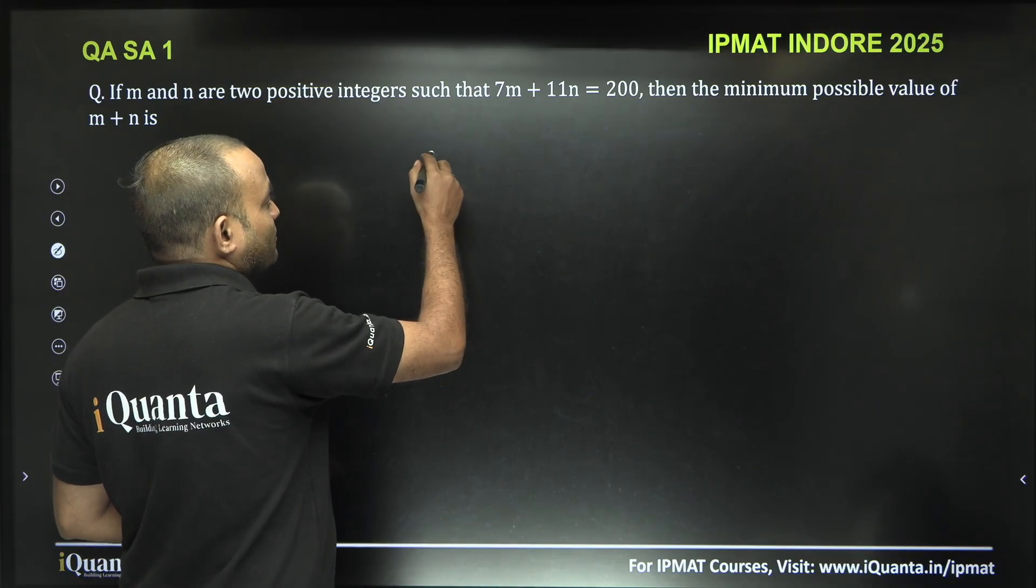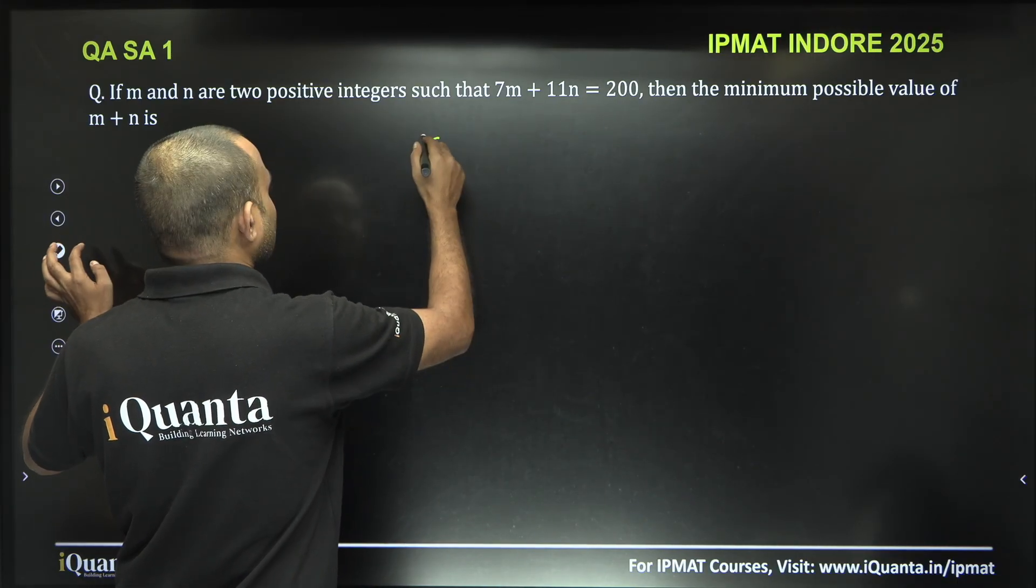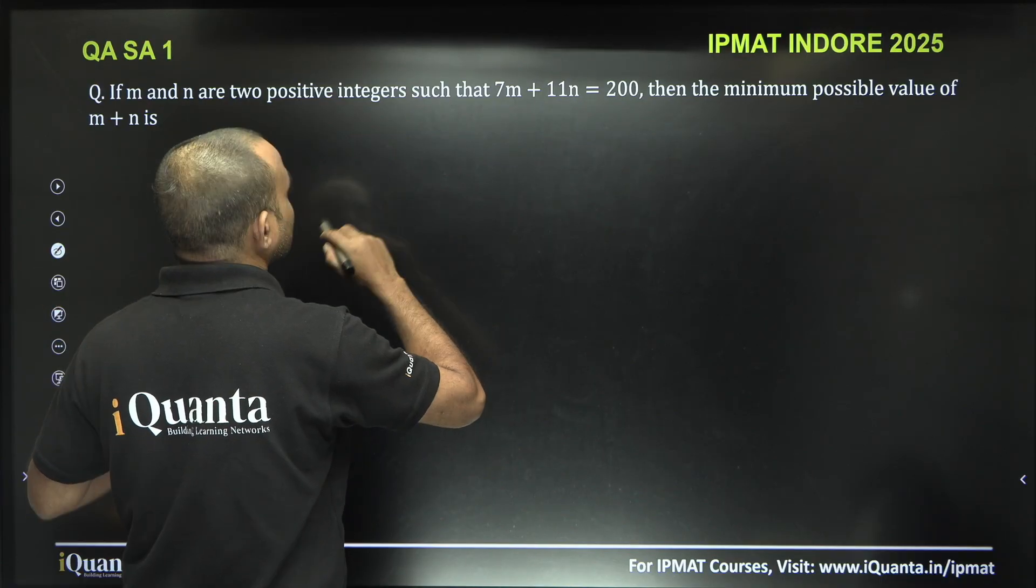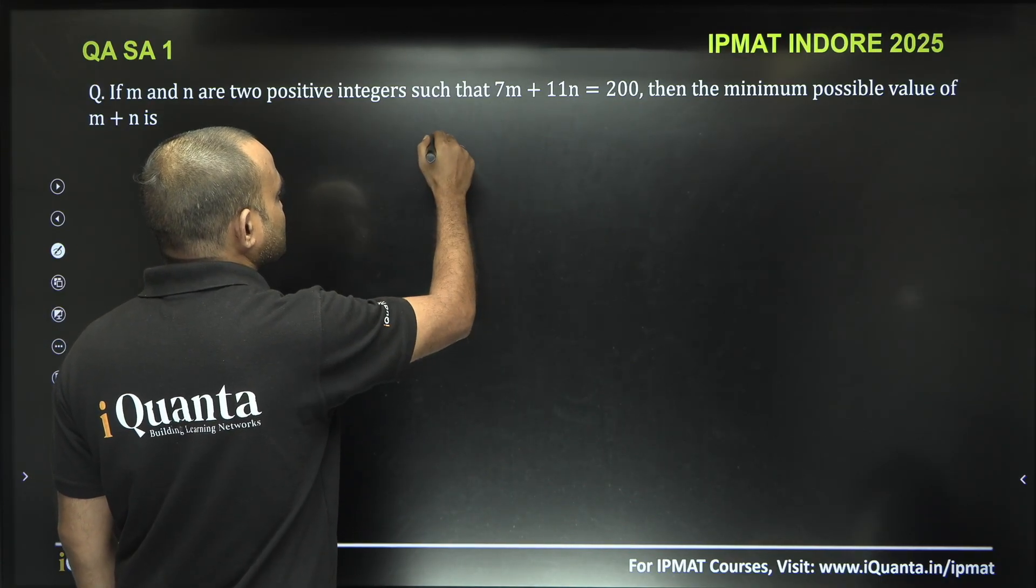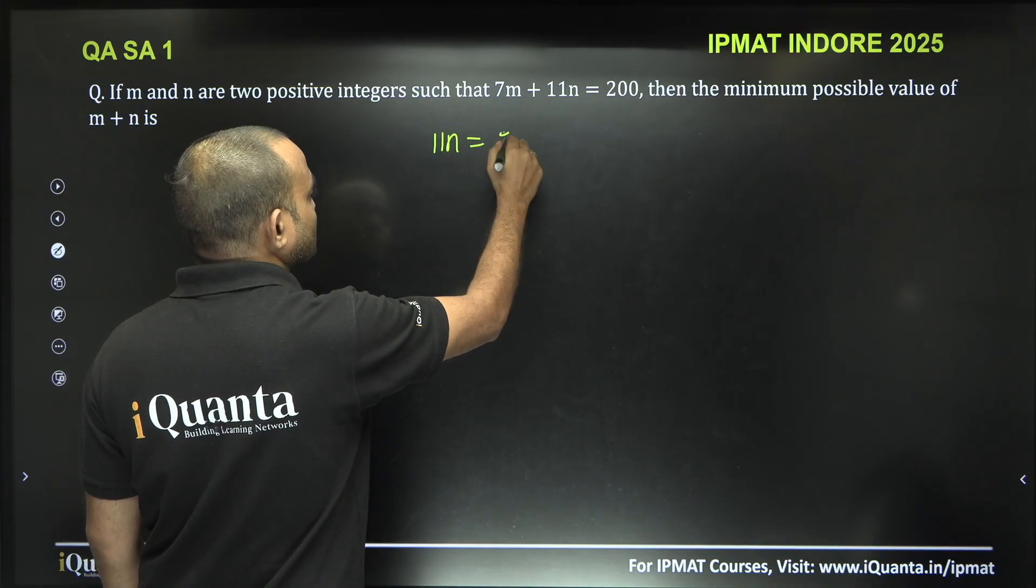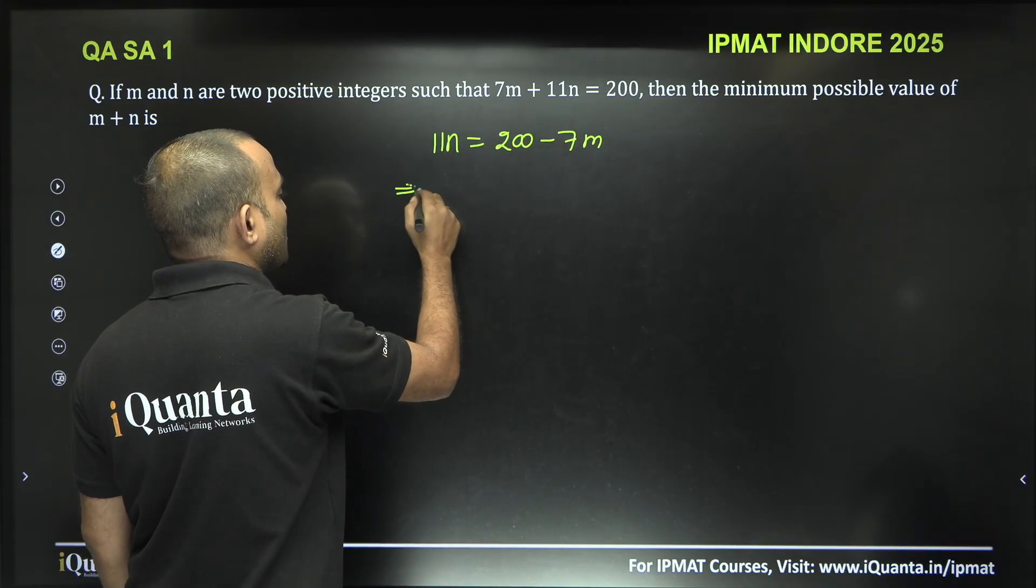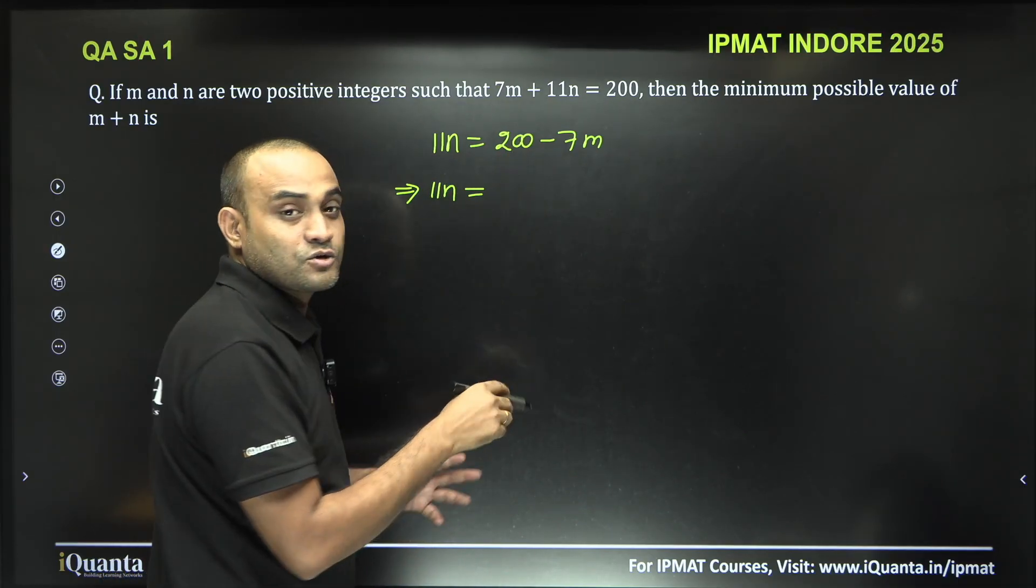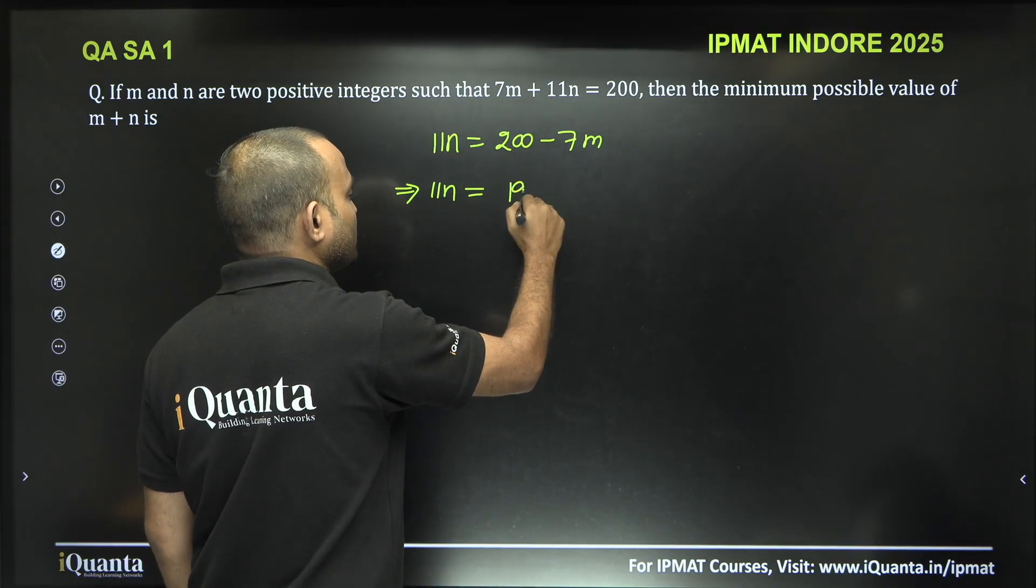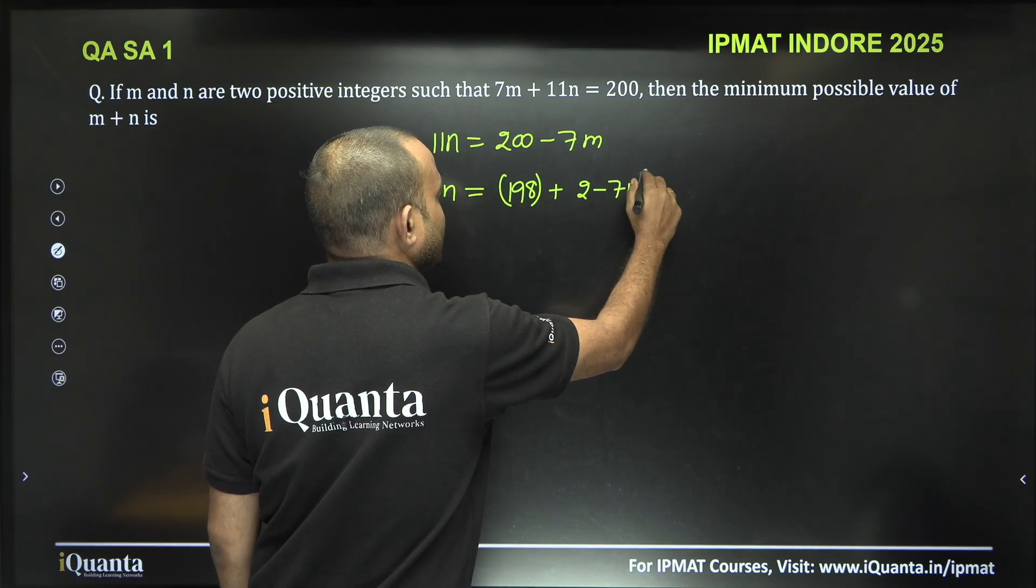We can say that 7m plus 11n is 200. We need to find the minimum value of m. So 11n is equal to 200 minus 7m, or we can say 11n is equal to, now break it into two parts, one of them is multiple of 11 which is 198 plus 2 minus 7m.